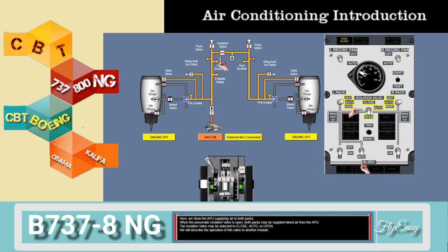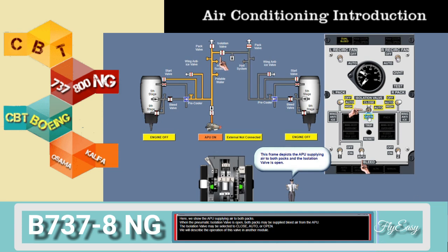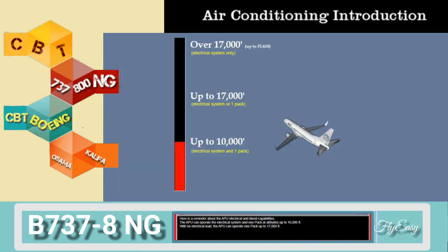Here we show the APU supplying air to both packs. When the pneumatic isolation valve is open, both packs may be supplied bleed air from the APU. The isolation valve may be selected to close, auto, or open. The APU can operate the electrical system and one pack at altitudes up to 10,000 feet with no electrical load, and can operate one pack up to 17,000 feet.